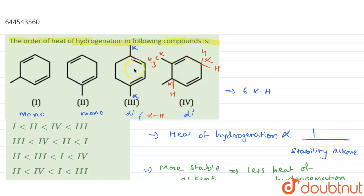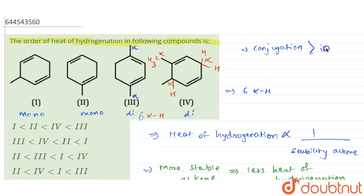Both compounds 3 and 4 have six alpha hydrogen atoms. However, compound 3 is a symmetrical structure where conjugation is successfully maintained. We give preference to conjugation over isolated systems first. Compound 4 has conjugation loss, so compound 3 is more stable than compound 4.